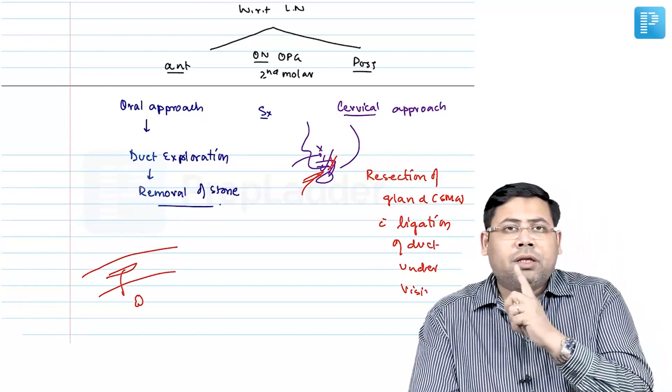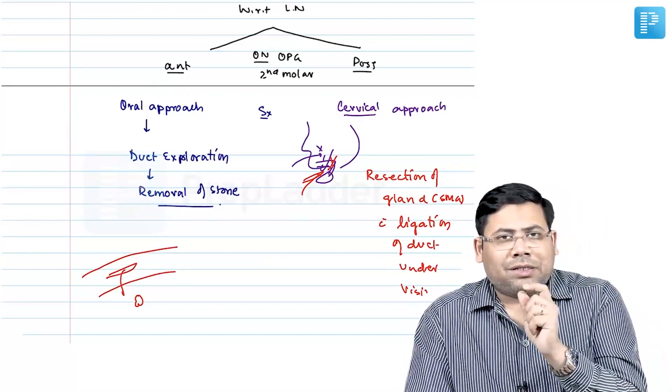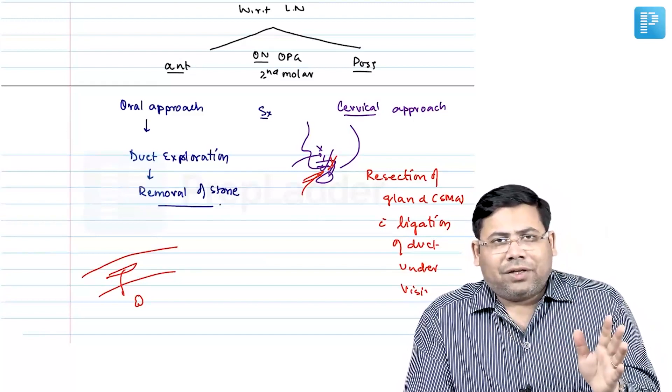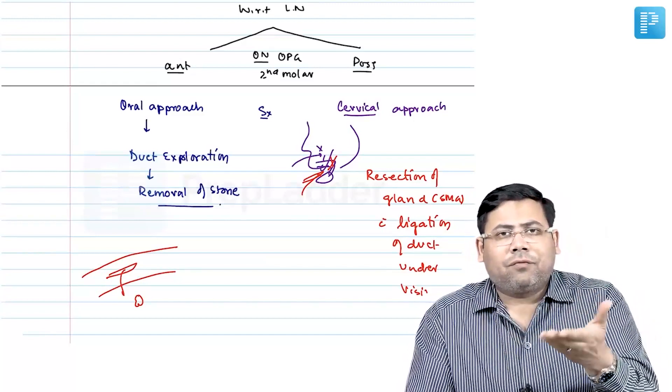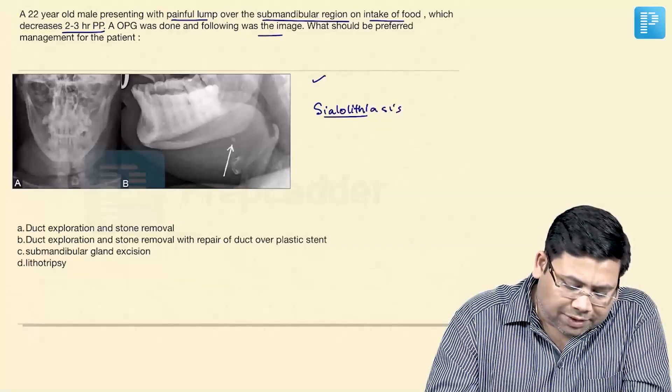Remember, do not close the duct, because if you close Wharton's duct, it will get stenosed. Already the saliva is coming out from the orifice, it will come from this orifice also.